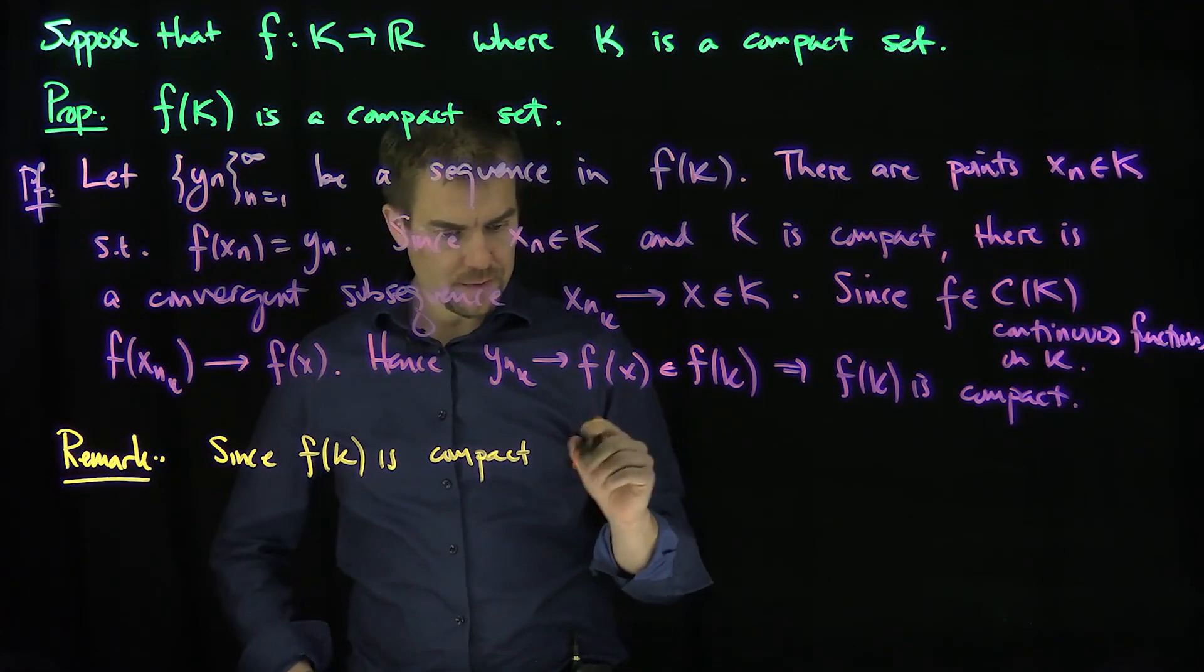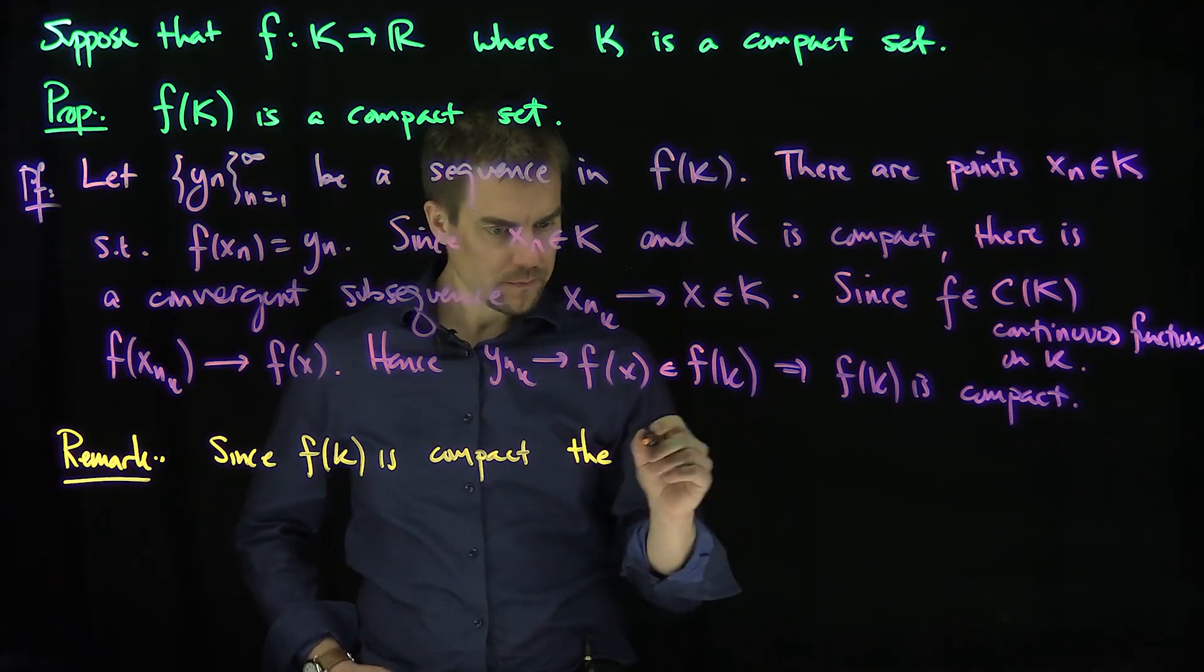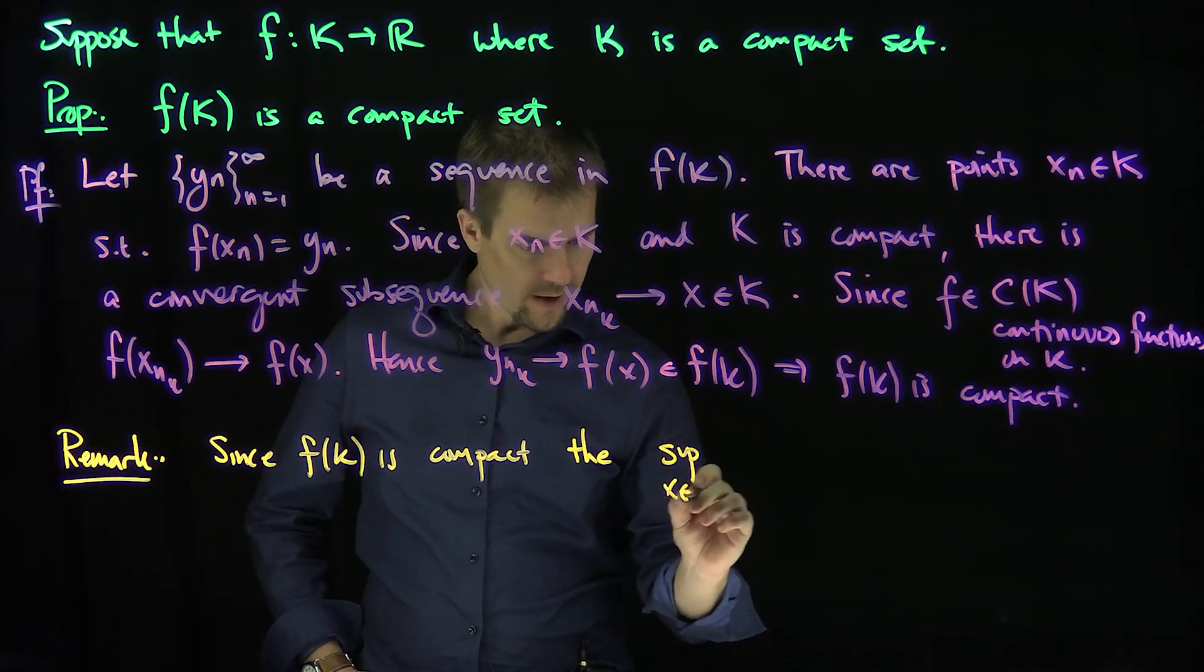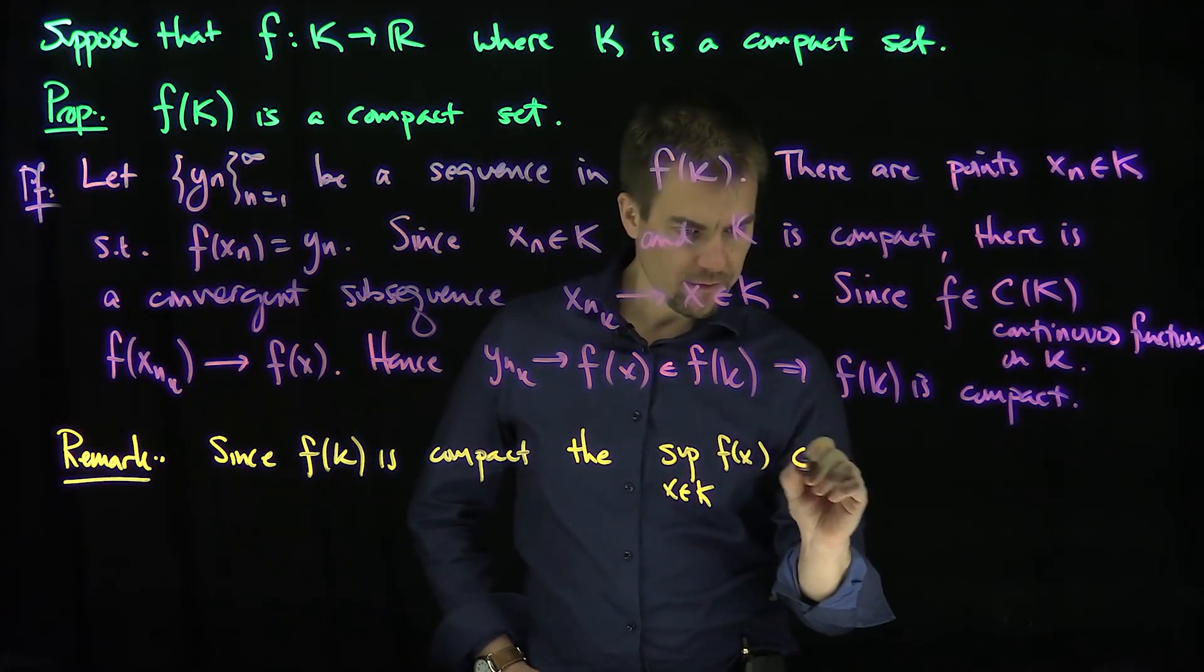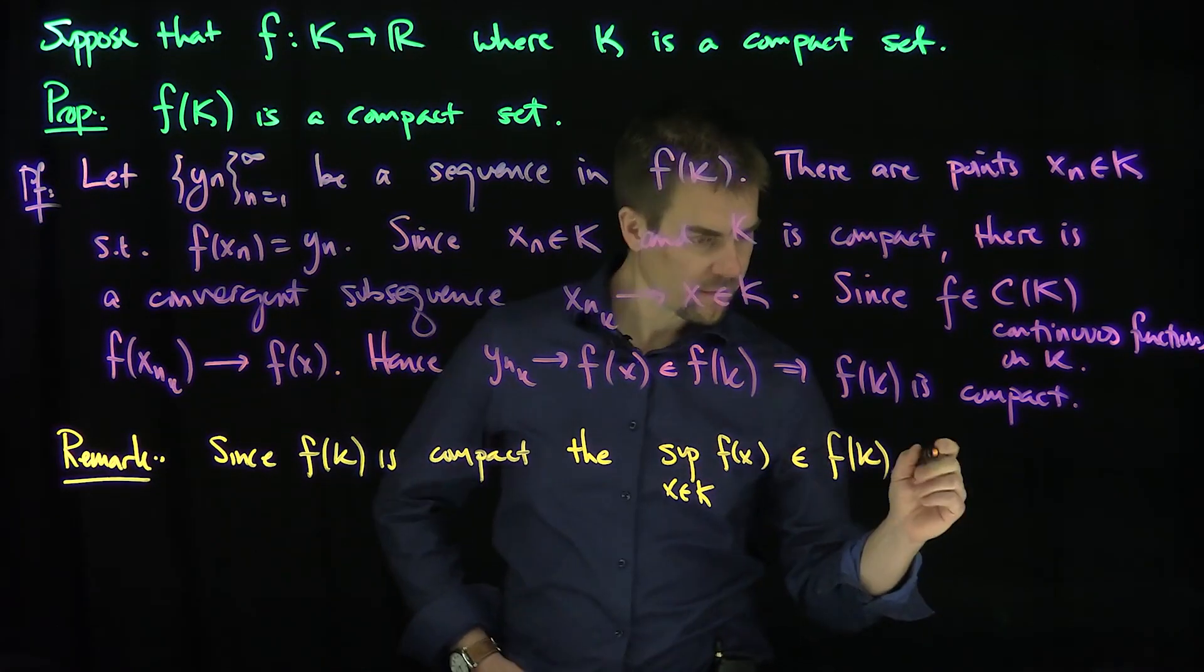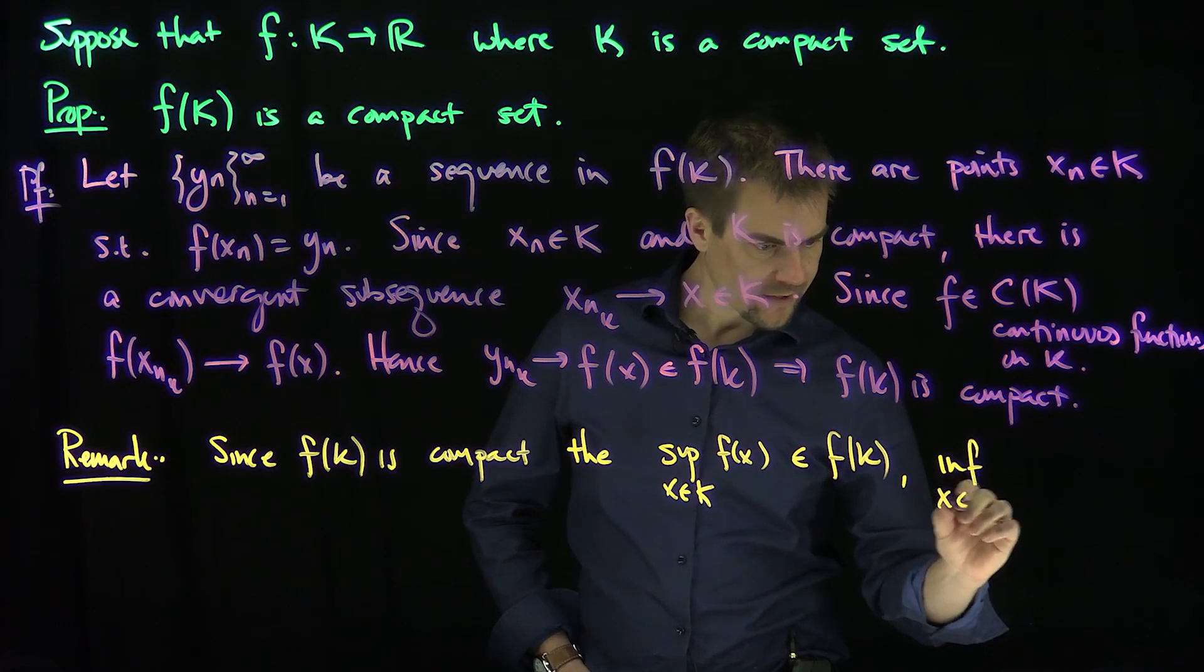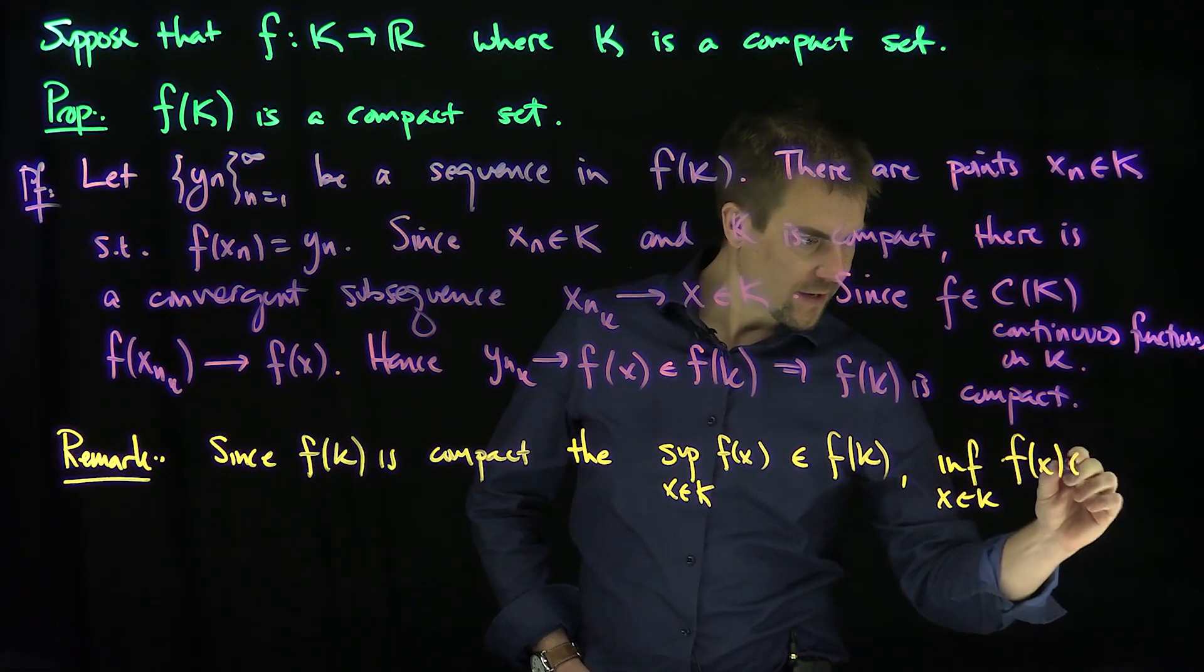There are points in K where the supremum and infimum of f are attained. That is, the supremum of f(x) over x in K is in f(K), and likewise the infimum of f(x) over x in K is in f(K).